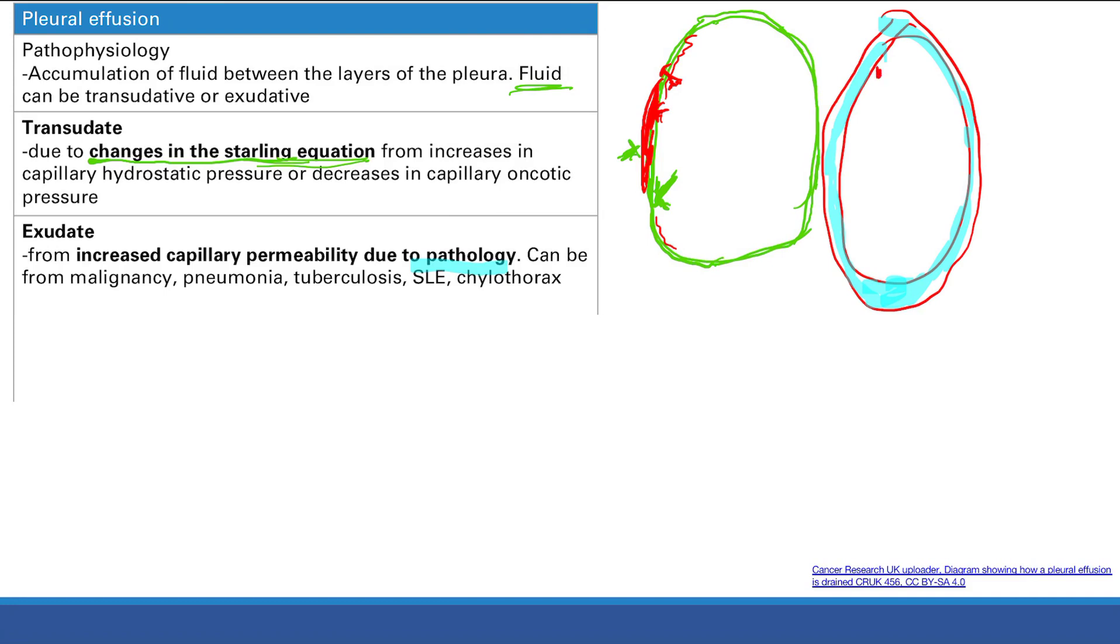So you get too much lymph in your lungs and it's going to go into this space instead and you get this exudative pleural effusion. So let's erase all our drawings now.